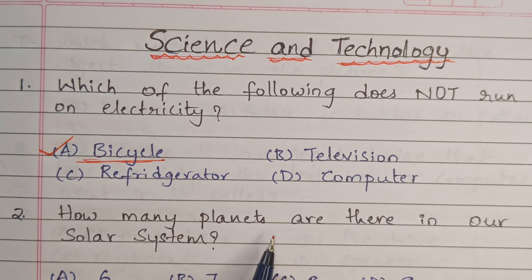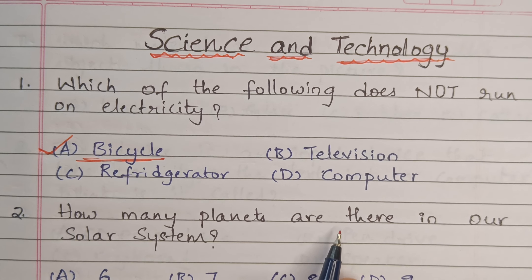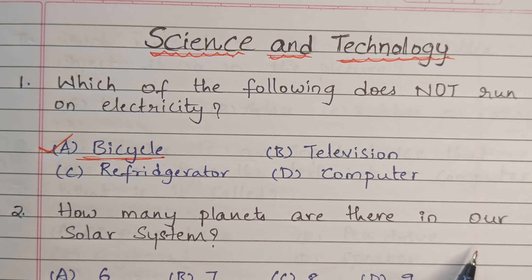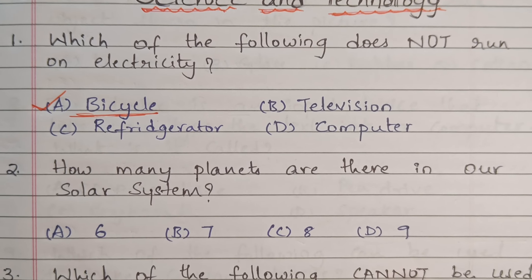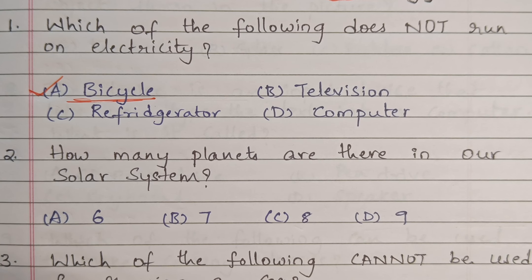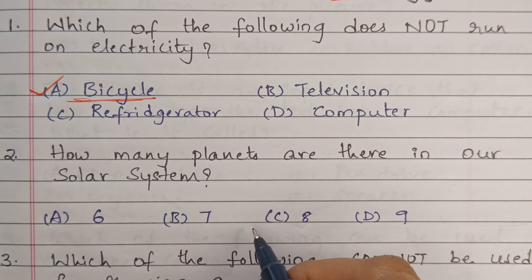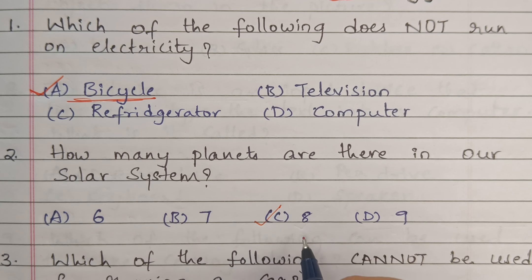How many planets are there in our solar system? 8.